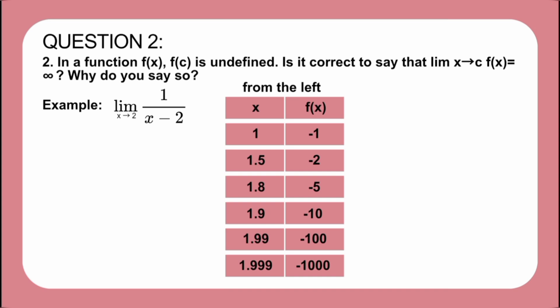From the left, we have x values of 1, 1.5, 1.8, 1.9, 1.99, and 1.999. Substituting these into our equation to get f of x, we get negative 1 for x equal to 1, negative 2 for 1.5, negative 5 for 1.8, negative 10 for 1.9, negative 100 for 1.99, and negative 1000 for 1.999.